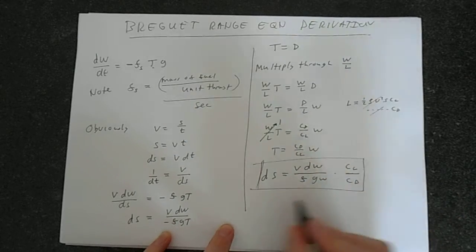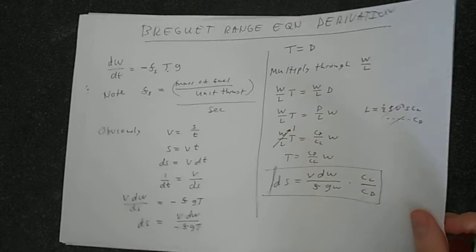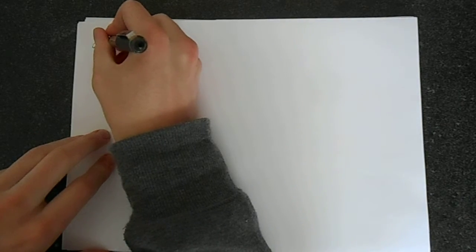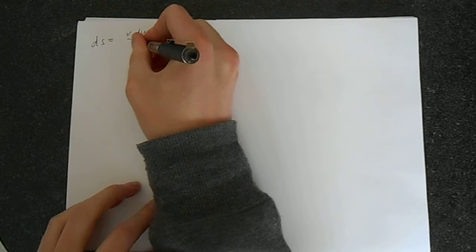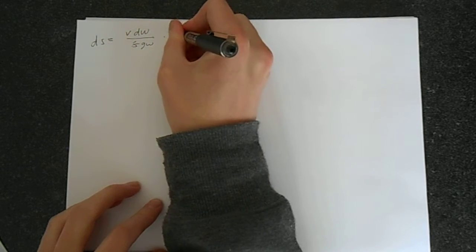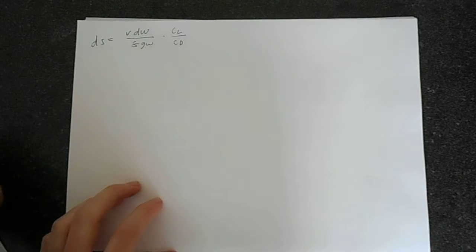This is an important result. If we integrate this, we can get the range. And I'll just show you how that's done. So let's copy across what we've got before. So we've got dS equals v dW over f g W times c_l over c_d.